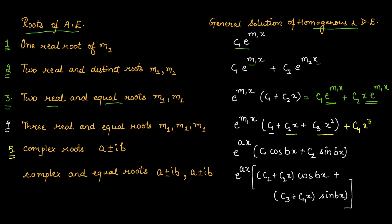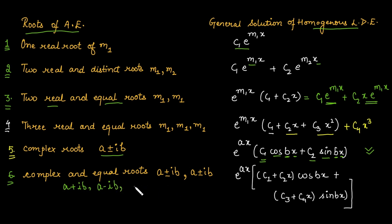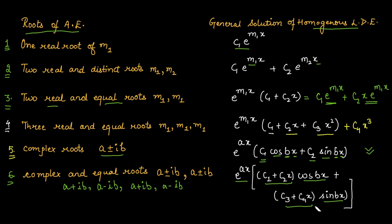The fifth case is complex roots, which always occur in conjugate pairs (a ± ib). The solution is e^(ax)·[c1·cos(bx) + c2·sin(bx)], where a is the real part and b is the imaginary part. The sixth case is repeated complex roots: if the pair a ± ib occurs twice, the solution is e^(ax)·[(c1 + c2·x)·cos(bx) + (c3 + c4·x)·sin(bx)].